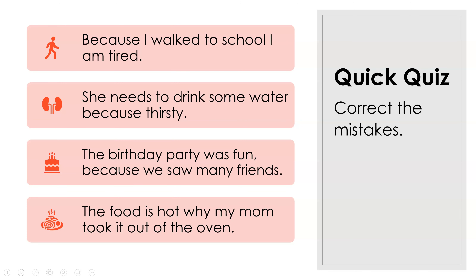Let's do a quick quiz. Find the mistakes in these sentences. One: 'Because I walk to school I am tired.' Two: 'She needs to drink some water because thirsty.' Three: 'The birthday party was fun because we saw many friends.' Four: 'The food is hot. Why my mom took it out of the oven.'